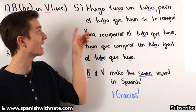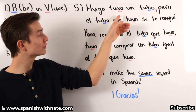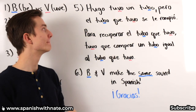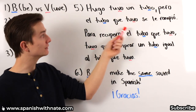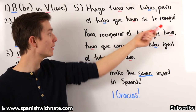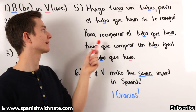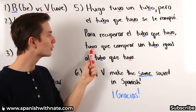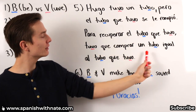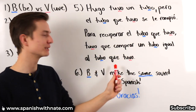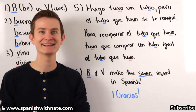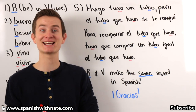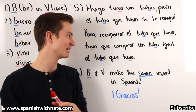I'll say it again one more time: Hugo tuvo un tubo, pero el tubo que tuvo se le rompió, para recuperar el tubo que tuvo, tuvo que comprar un tubo igual al tubo que tuvo. Try to say that one fast — it's a good one.